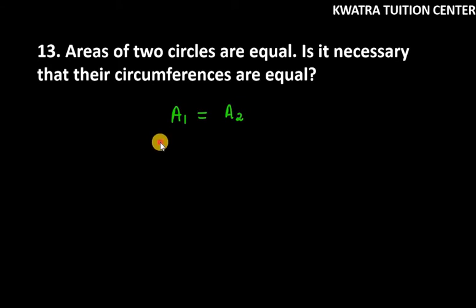Is it necessary that their circumferences are equal? So, area equal dhya hoa is ka matlab, A1 is equal to A2, pi r1 square is equal to pi r2 square.